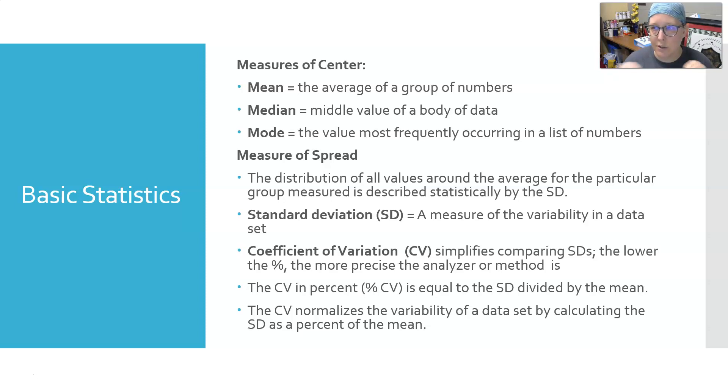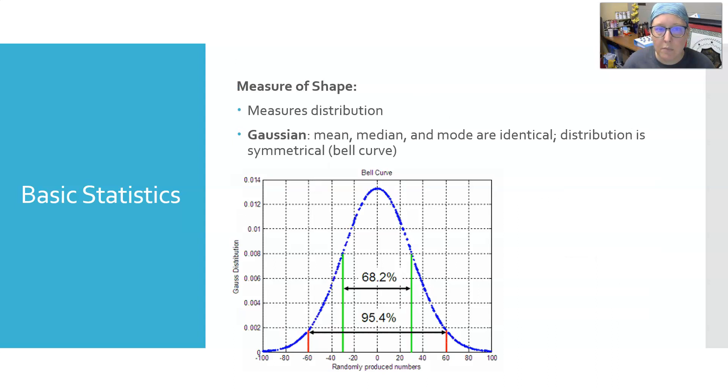The CV normalizes the variability of data by calculating the standard deviation as a percent of the mean. In chemistry, you want to keep your CVs below three percent, definitely below five percent. A Gaussian distribution is a distribution in which the mean, median, and mode are all identical and the distribution is symmetrical around the mean.